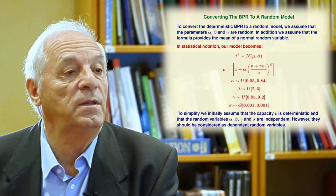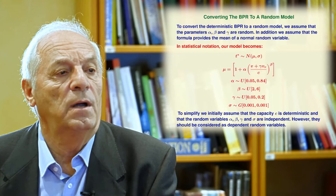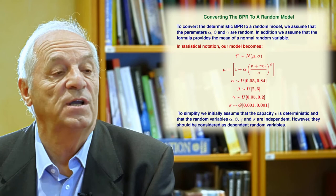And to simplify, we have assumed that alpha, beta and gamma are uniform. And that sigma is a gamma with parameters very small, 0.001, which means that are non-informative. It is not exactly uniform, but it is close to the uniform.